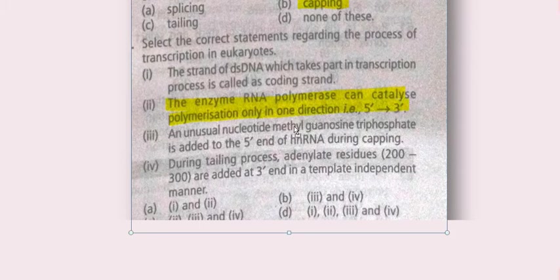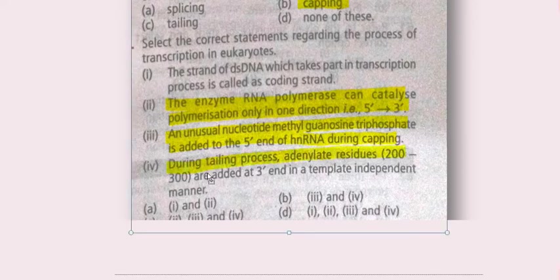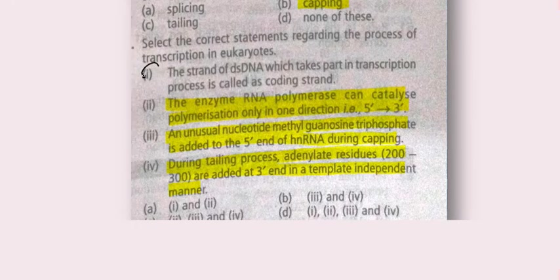Statements two, three, and four are correct: RNA polymerase catalyzes polymerization only in the 5' to 3' direction; methyl guanosine triphosphate is added to the 5' end during capping; and adenylate residues are added at the 3' end in a template-independent manner during tailing. Statement one is wrong — the strand that takes part in transcription is the template strand, not the coding strand.